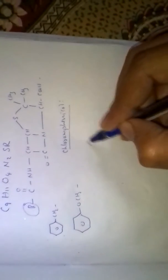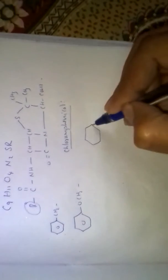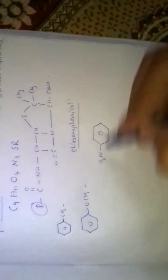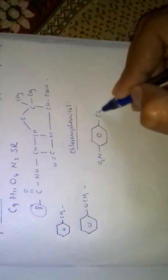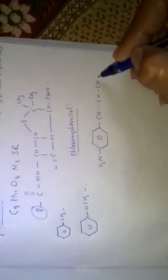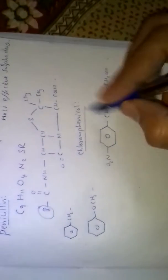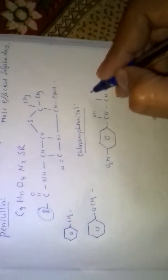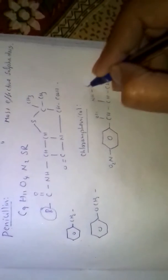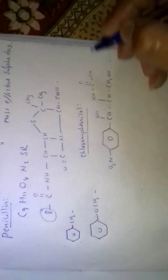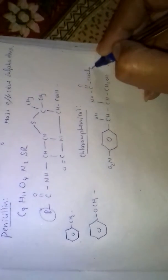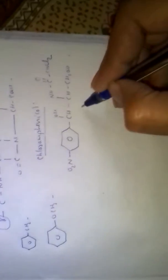The next effective antibiotic is chloramphenicol. It is the first antibiotic to contain a nitro (NO₂) group. Chloramphenicol is used for urinary infections and for the treatment of typhoid fever.